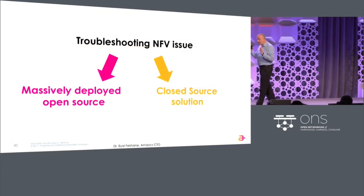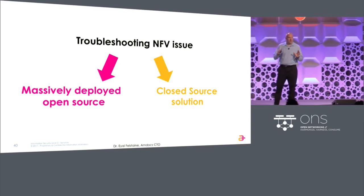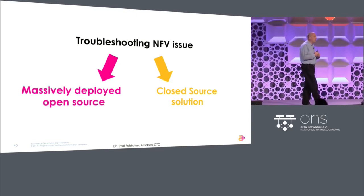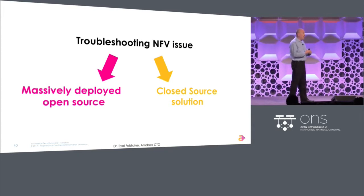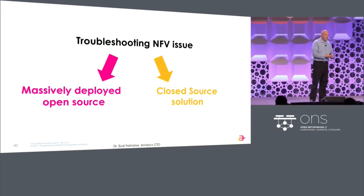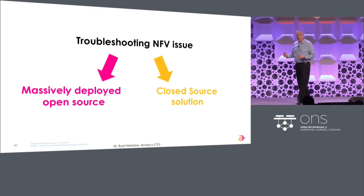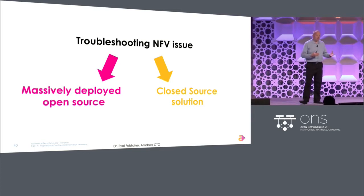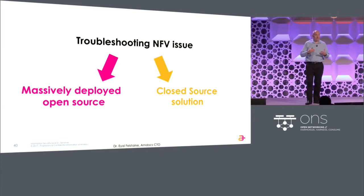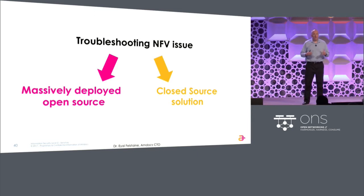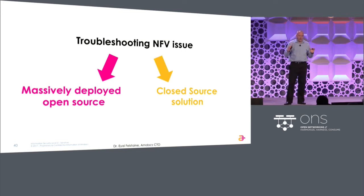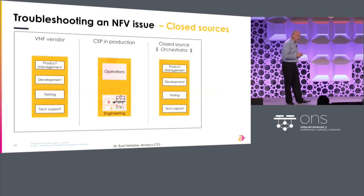I'm going to give you an example of troubleshooting an NFV issue — something we had in live cases with our customers — and I'm going to show you how we run this in two environments: one with an open source orchestrator, or at least an orchestrator that the community has access to, and the other with a closed source orchestrator. You will see, I think by the comparison of just one box, which one is really easier.